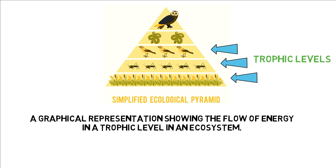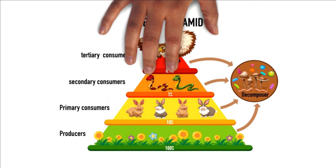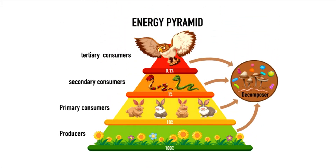The width of each bar in the energy pyramid shows the amount of energy in each trophic level. Ibig sabihin dahil isa itong pyramid, may kita natin na pinakamalawak or pinakamalaki ang width ay nasa ibaba. This part is occupied by the producers. Plants are producers — organisms that can make their own food using sunlight. On top of the producers, we have the consumers. And also, when the consumer dies, the energy will then be transferred to a decomposer.